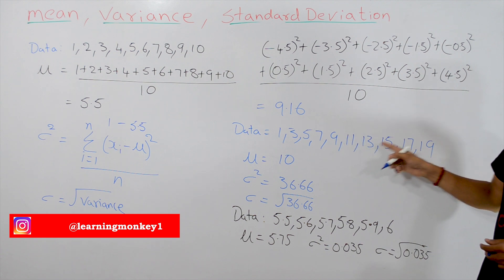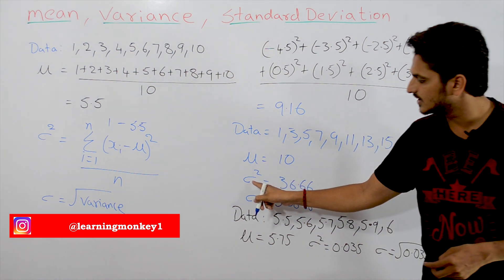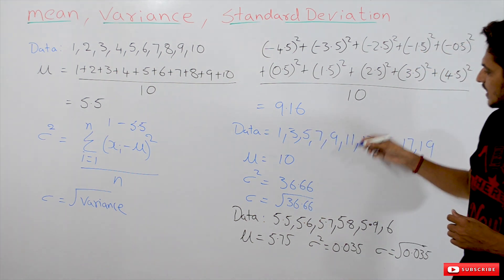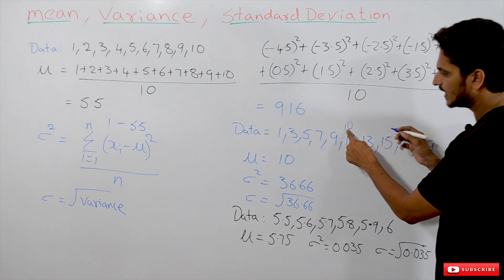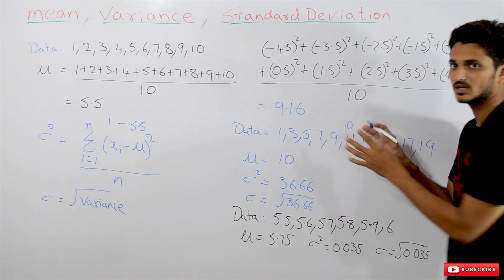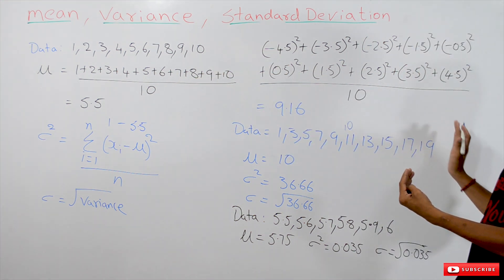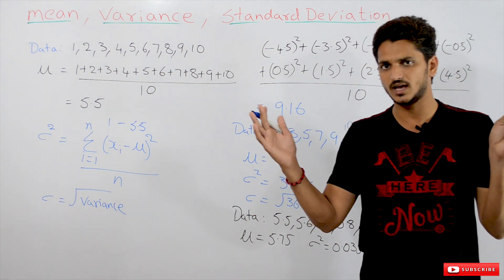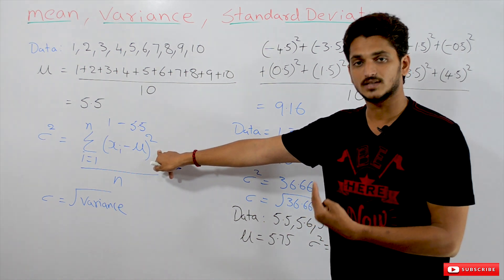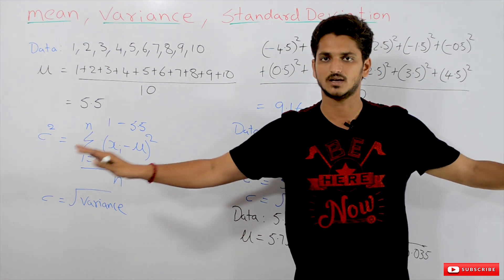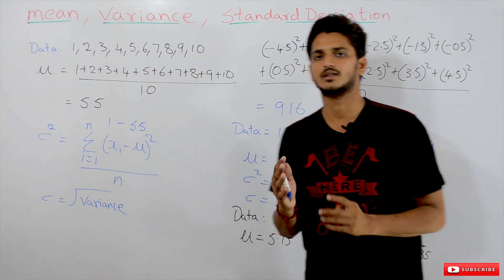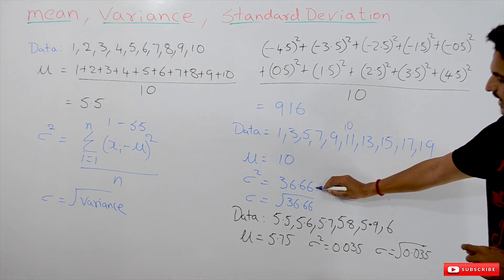Now take a second dataset: 1, 3, 5, 7, 9, 11, 13, 15, 17, 19. The mean value is 10 and the variance value is 36.66. Why is this value bigger? The mean is 10, and the data spreads 9 units to the left (down to 1) and 9 units to the right. As the data has a large spread, the distance from the mean increases, so the variance value increases. That is why the variance is 36.66.